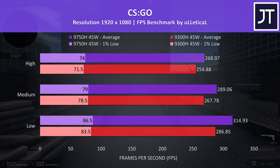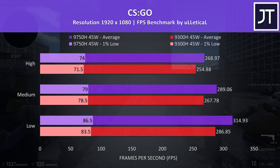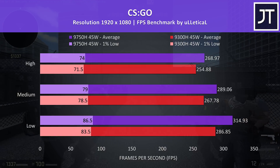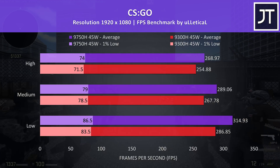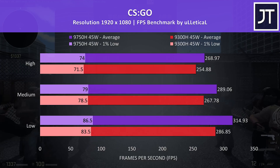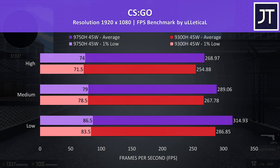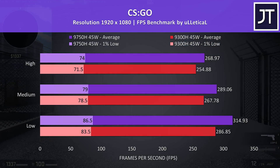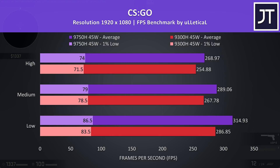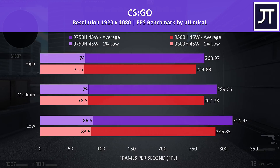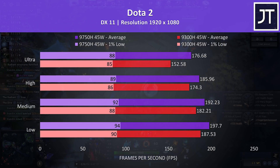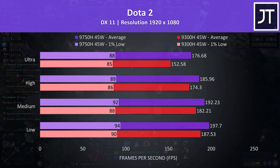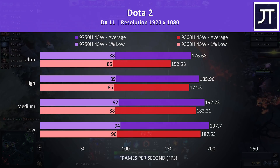CS:GO was tested with the Ulletical FPS benchmark, and is a game that really cares about CPU power, so it wasn't much of a surprise that this game saw one of the largest differences out of all 15 titles tested. At max settings the i7 was 5.5% faster than the i5, then almost 10% faster at low settings where we're less GPU bound. Dota 2 is another game that typically relies more on CPU power, and at low settings the i7 was 5% faster than the i5.